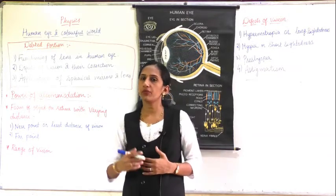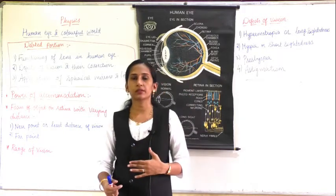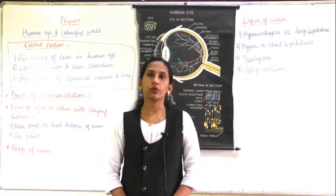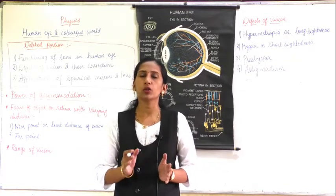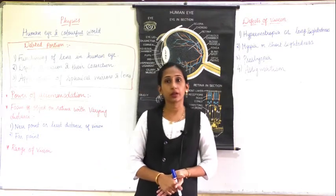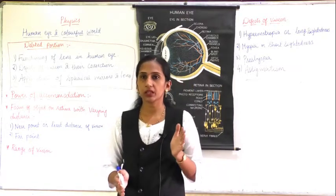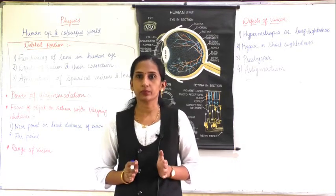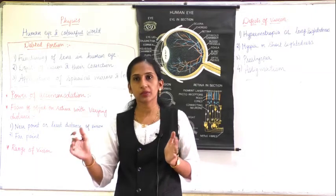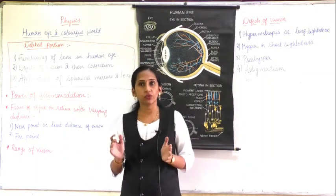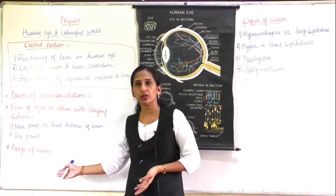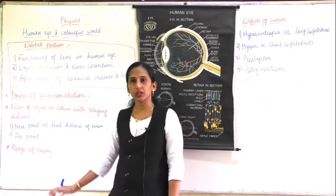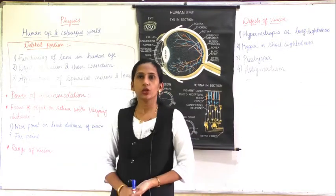So a normal person can see from 25 centimeters to infinity. The range of vision is the distance between the near point and the far point. For a normal eye, the range of vision is from 25 centimeters to infinity.